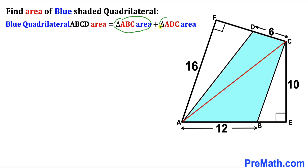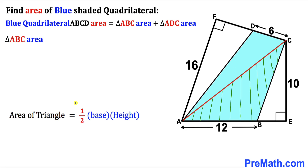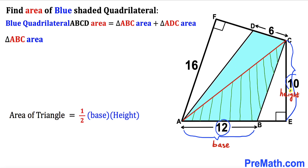Let's calculate the area of triangle ABC. Recall that the area of a triangle equals one-half times base times height. In our case the base is 12 and the height is 10, so the area of triangle ABC equals one-half times 12 times 10, which gives us 60 square units.